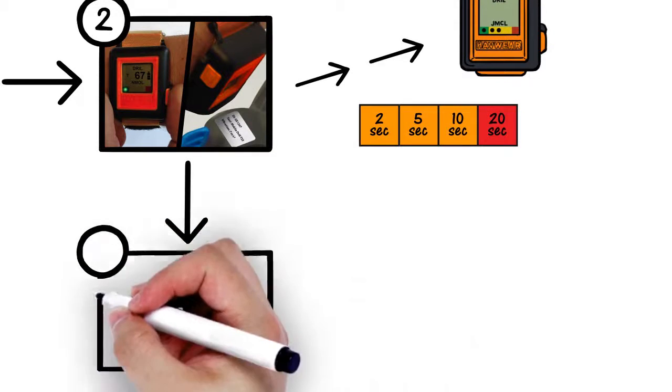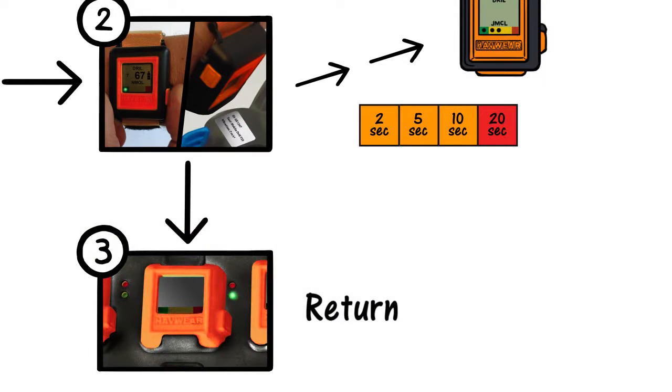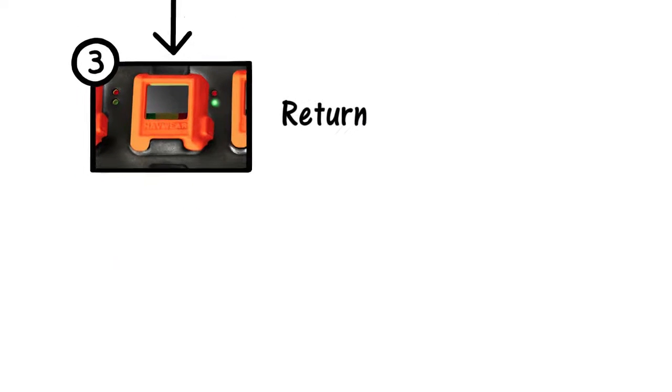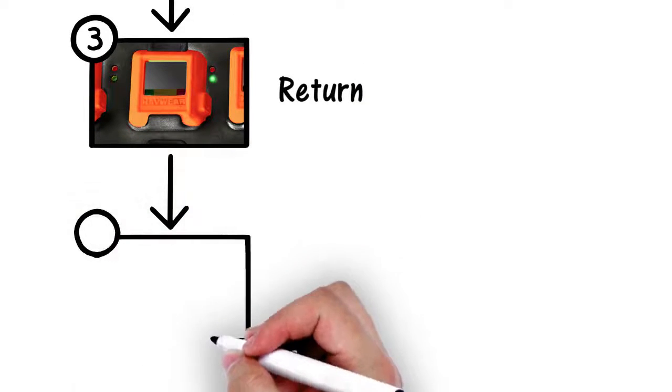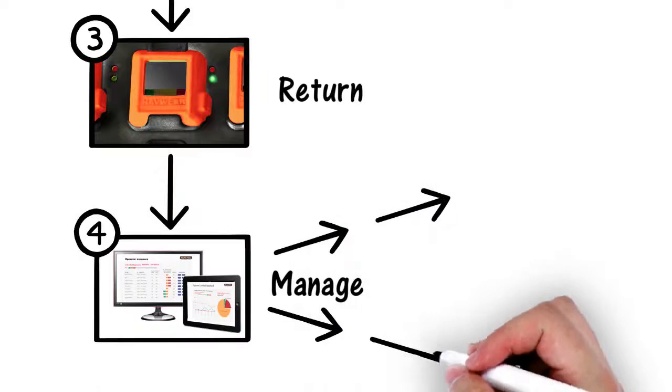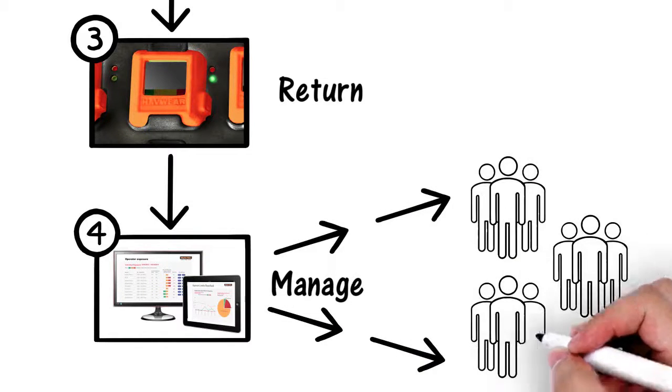At the end of a shift, the operator returns the Havware to a docking station to recharge and transmit data. Securely hosted by Reactec, companies can centrally manage employee access to specific reports.